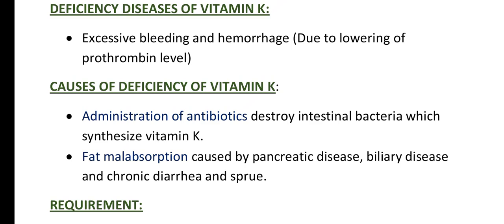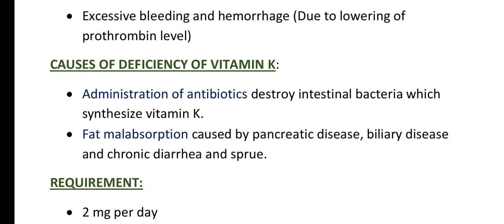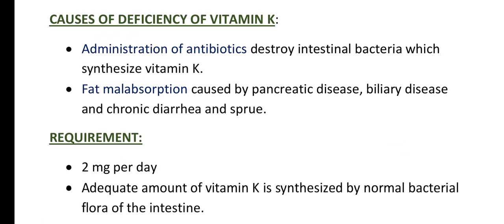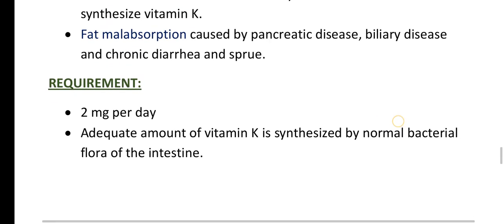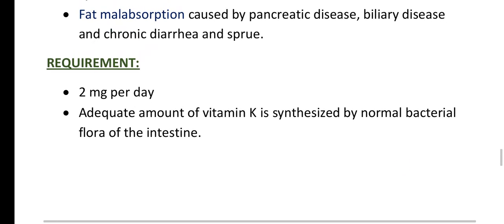Now coming to deficiency diseases of vitamin K. Vitamin K deficiency causes excessive bleeding and haemorrhage due to a lowering of prothrombin level. Vitamin K deficiency is due to the administration of antibiotics, because antibiotics destroy intestinal bacteria which synthesize vitamin K, and also due to fat malabsorption caused by pancreatic disease, biliary disease, chronic diarrhea, and sprue. Per day, 2 mg of vitamin K is needed, and adequate amounts of vitamin K are synthesized by the normal bacterial flora of the intestine.